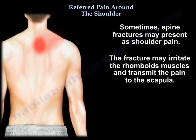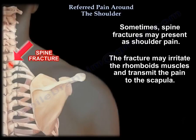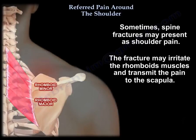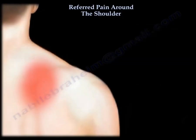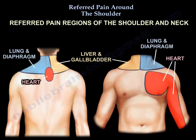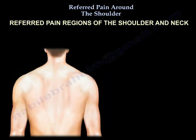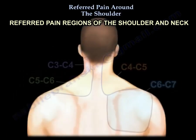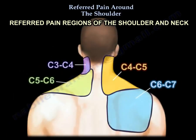Sometimes a spine fracture may present itself as shoulder pain. The fracture may irritate the rhomboid muscle and transmit the pain to the scapula. These are the referred pain regions of the shoulder and neck, showing where the pain arises from and how neck pathology can refer pain around the shoulder area.